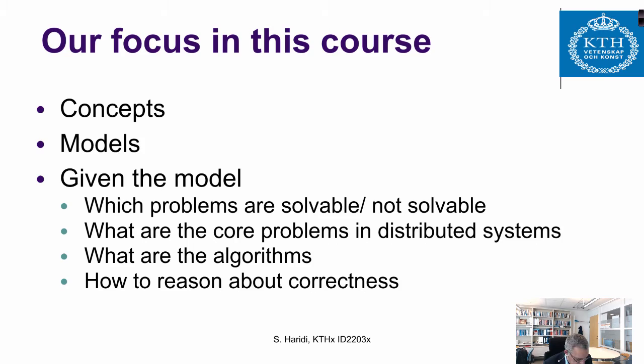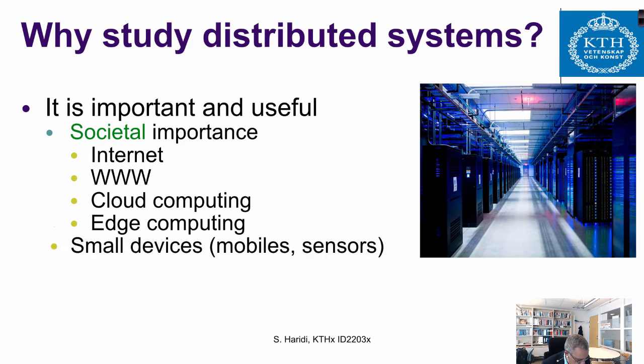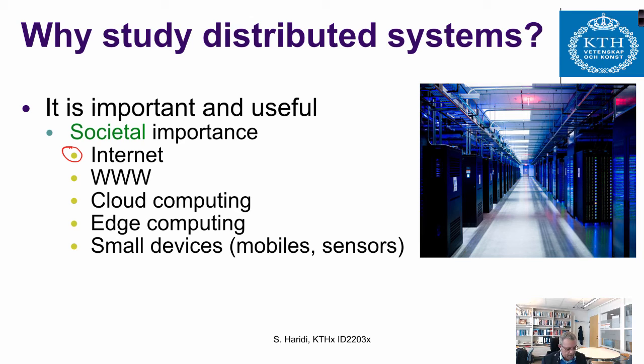Why do we study distributed systems? The first observation is that distributed systems are everywhere nowadays, so it is important from a societal and industrial point of view. The internet is actually a distributed system, the World Wide Web is a distributed system, cloud computing is a distributed system, and now we also hear about edge computing, where you have small devices connected to the distributed system.